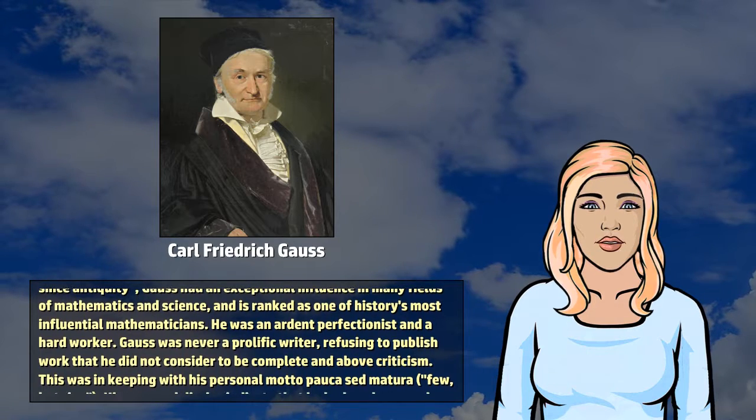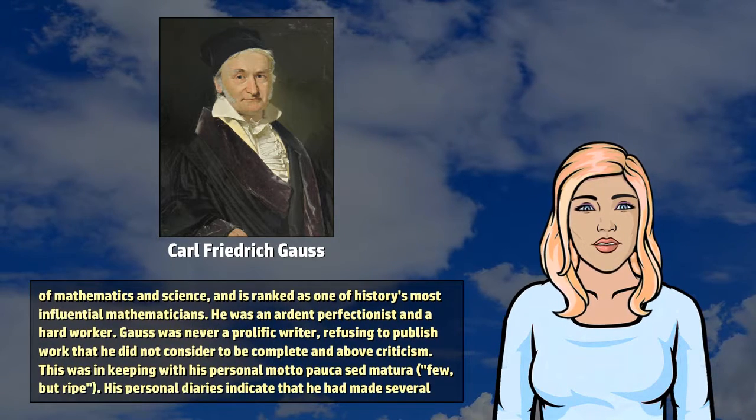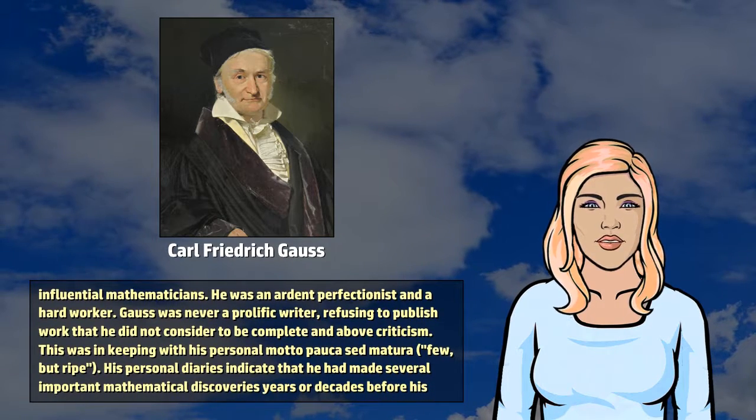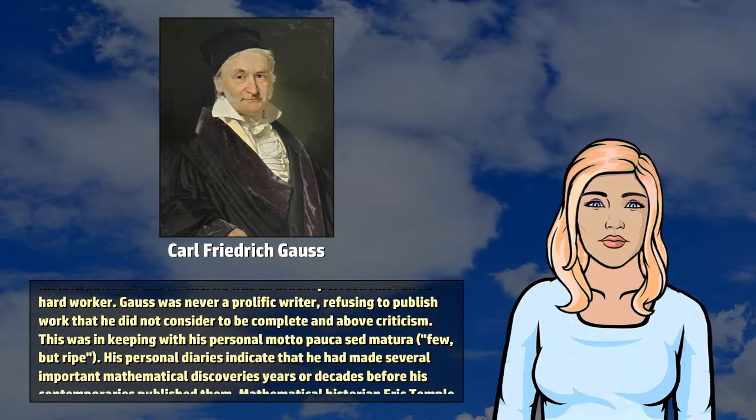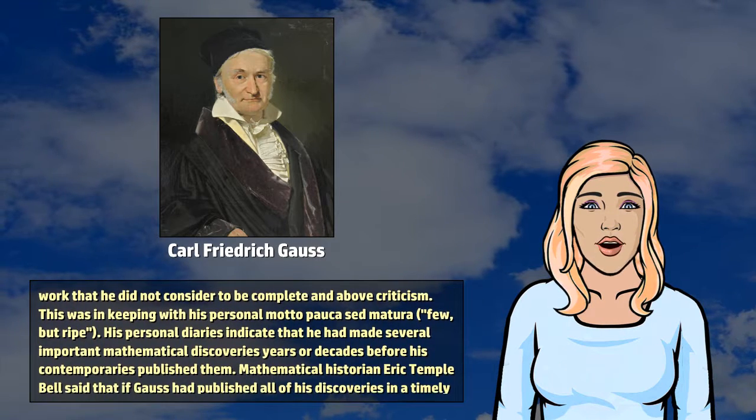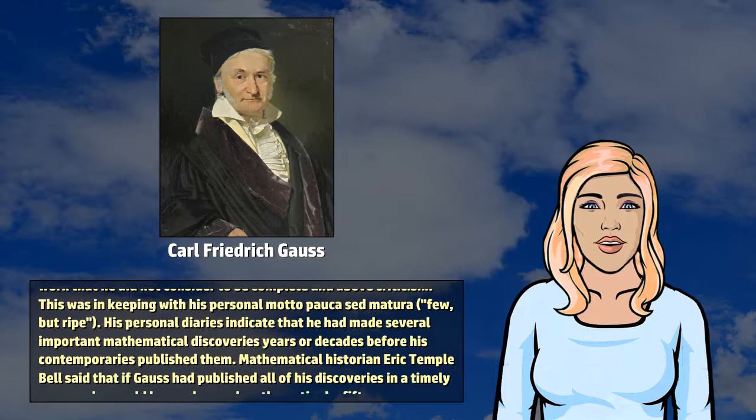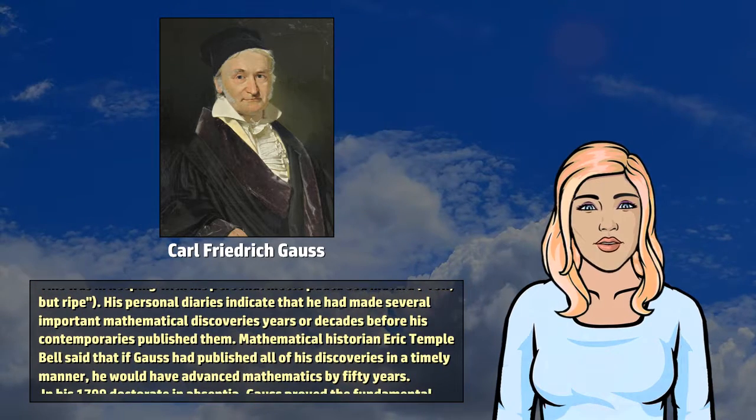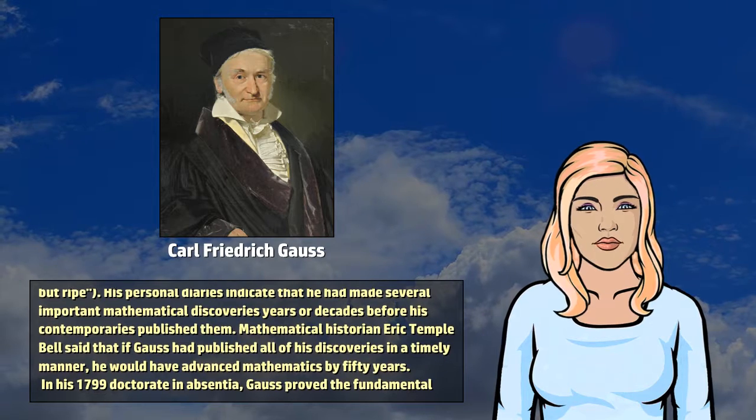He was an ardent perfectionist and a hard worker. Gauss was never a prolific writer, refusing to publish work that he did not consider to be complete and above criticism. This was in keeping with his personal motto Pauca Sed Matura, few, but ripe. His personal diaries indicate that he had made several important mathematical discoveries years or decades before his contemporaries published them.